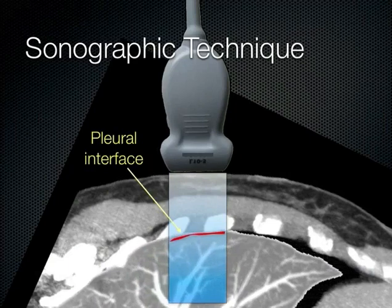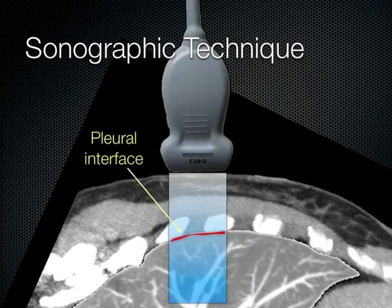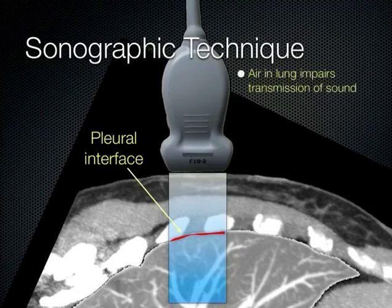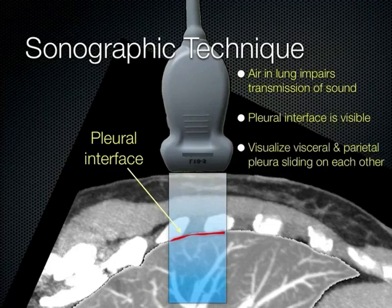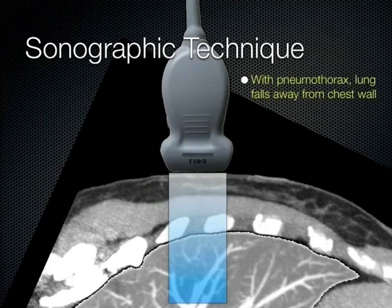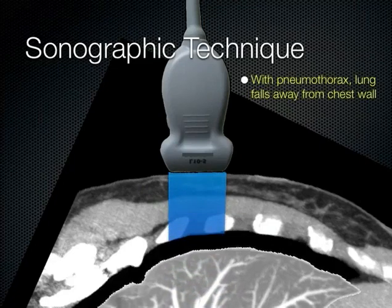Air impairs transmission of sound. When the lung is up, you may see faint B-lines and A-lines, but you won't see deep into the lung unless it's consolidated. You should be able to see the pleural interface and lung sliding. However, if the lung has collapsed, it drops away and you cannot get your ultrasound beam through that pocket of air to see anything underneath — including B-lines. Even if the patient has pulmonary edema, you won't see it because the air gets in the way.